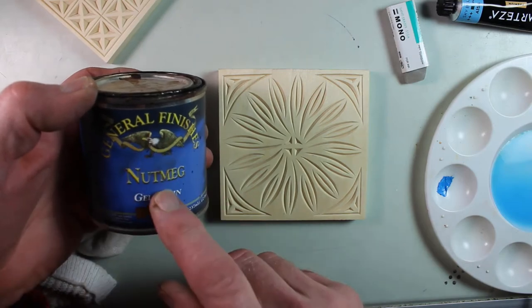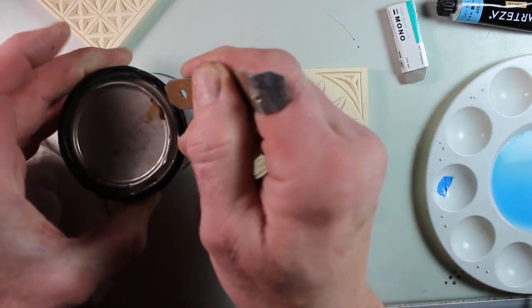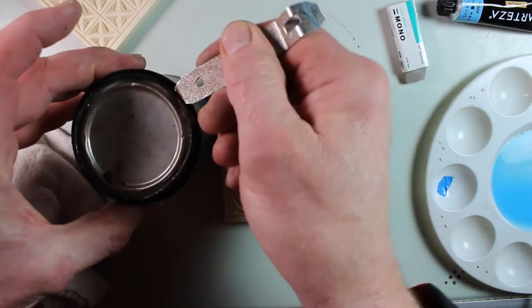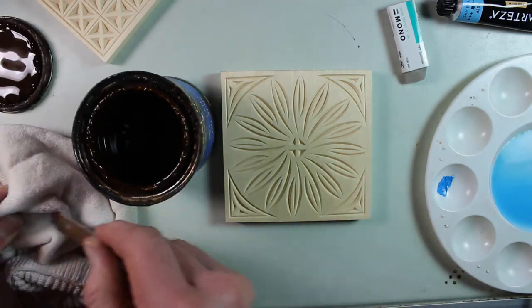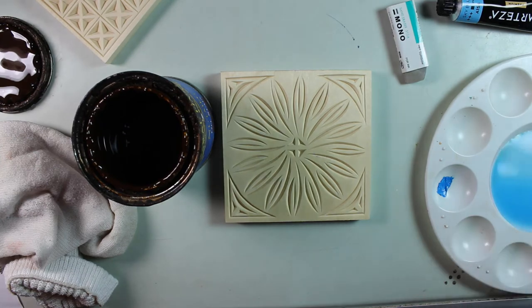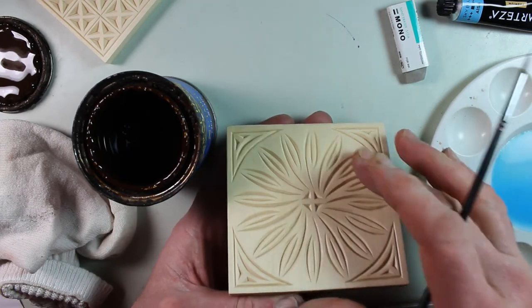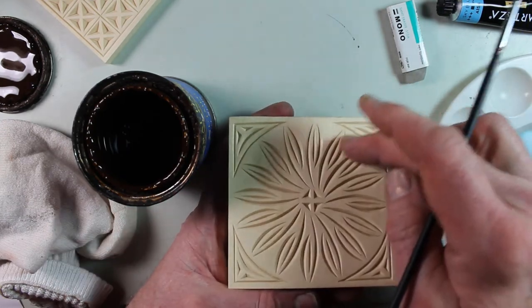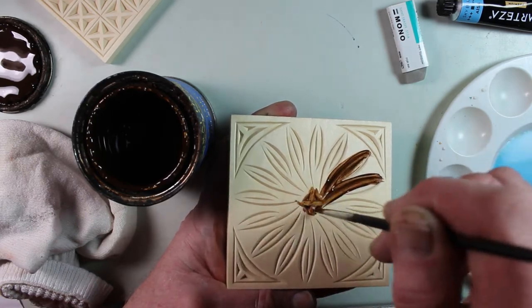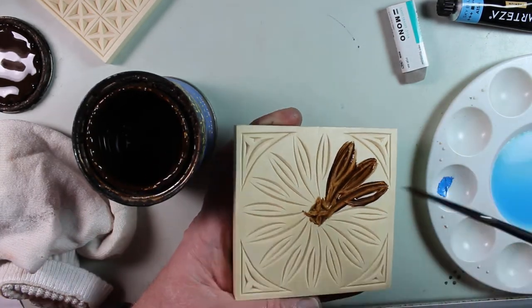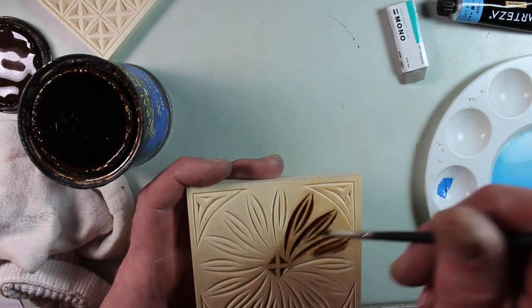I'm going to use this General Finishes Nutmeg Gel Stain and show you how that works. Gel stains are thicker than a regular oil-based stain and they dry on the surface. And with the surface sealed, when we apply the gel stain, we can wipe off most of the color on the surface. The better sealed the piece is, the less gel stain will adhere to the surface up on top. So I'm just going to brush this in and have a rag handy just like we did on the easy board pieces so I can wipe off the surface. So I'm not letting it puddle up down in the bottom, I'm just brushing it out.